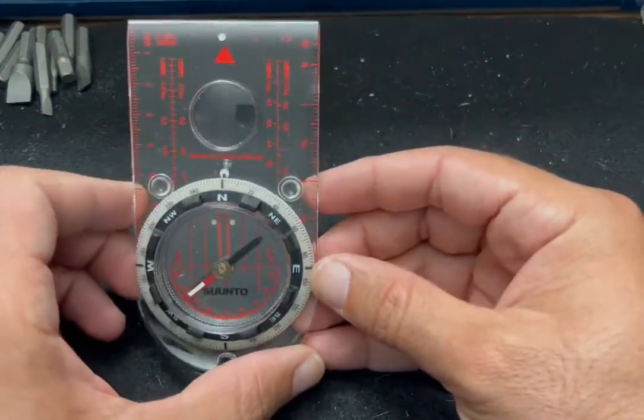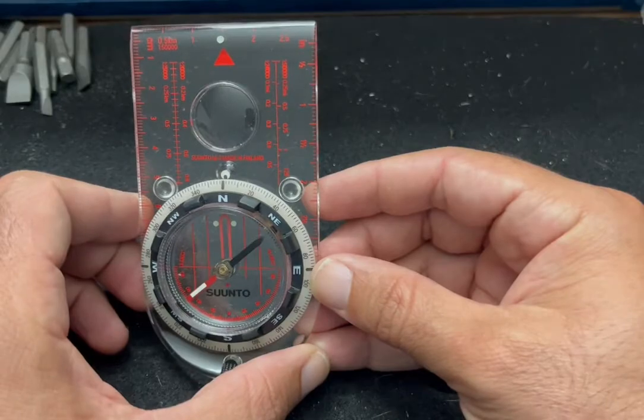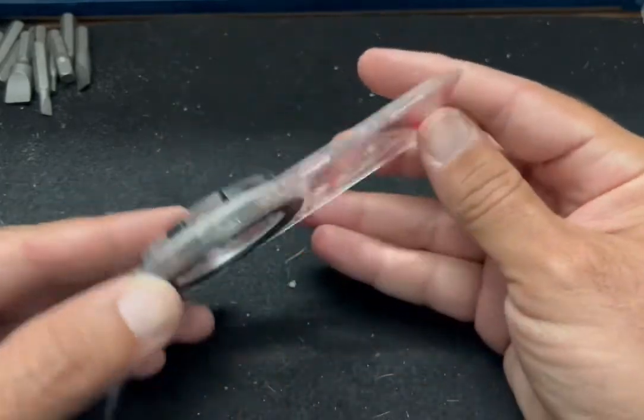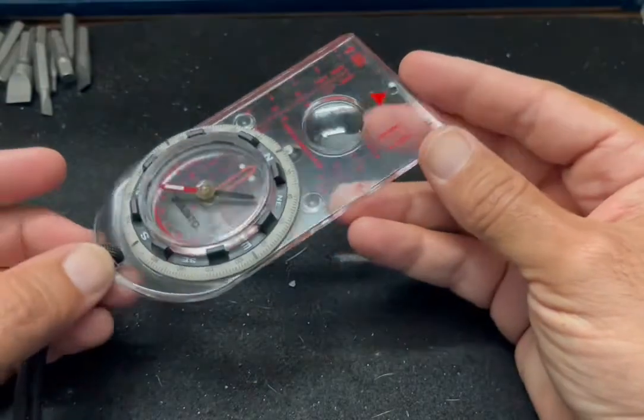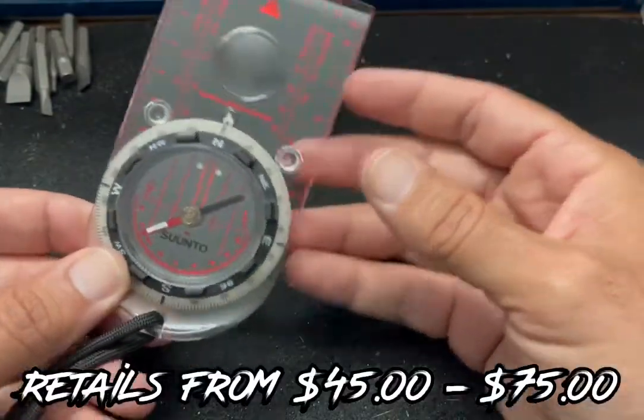This is the Suunto M3 compass. It's actually very neat—it's one of my favorite compasses to use. Actually, it is my favorite compass to use. I like it so much I have three of them.